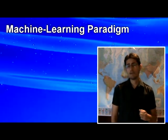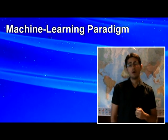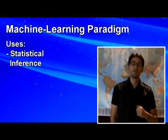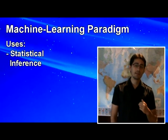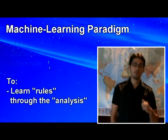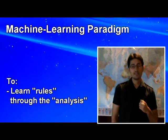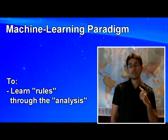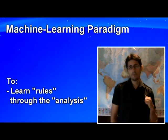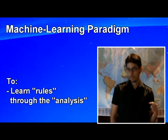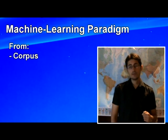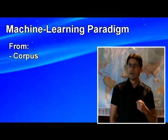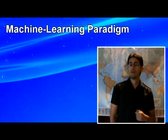The machine learning paradigm often uses statistical inference to automatically learn such rules through the analysis of a set of documents that have been hand-annotated with the correct values to be learned. These documents are named corpus.